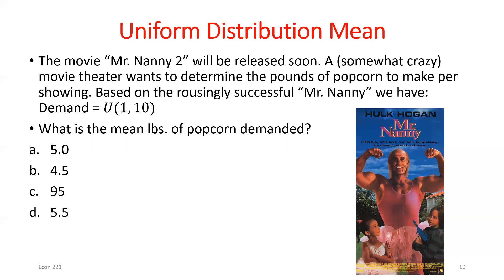You can plug those values into the probability density function formula if you prefer. On your formula sheet you'll have the function with d and c as the max and min of the uniform distribution, and b and a as the max and min of the interval you're interested in. Personally I think drawing the distribution and finding the area of a rectangle prevents easy mistakes. What if I wanted the probability demand was between 2 and 2.5 pounds? It should be exactly the same — it's the same interval length of 0.5, and for a uniform distribution every interval of the same length has the same probability.